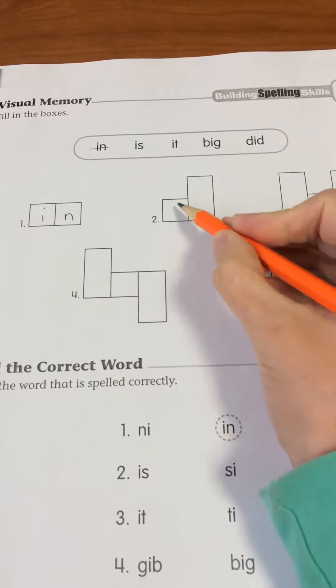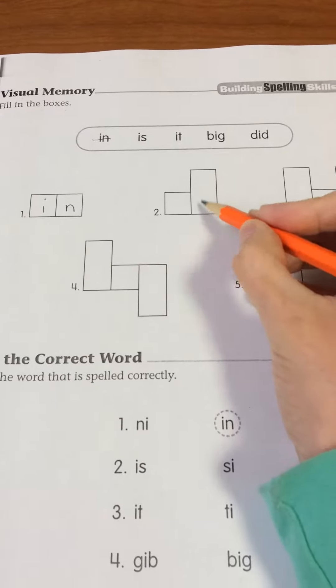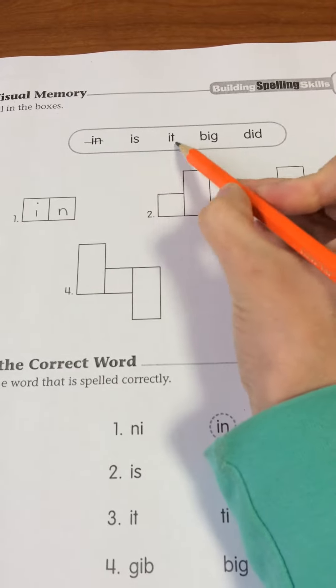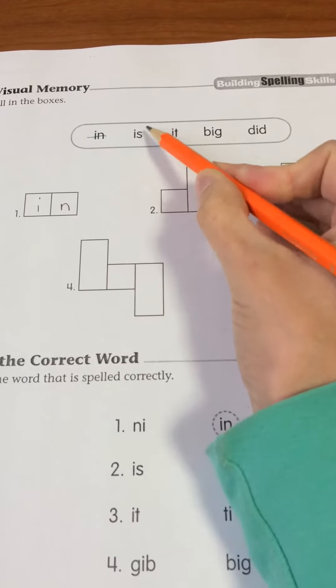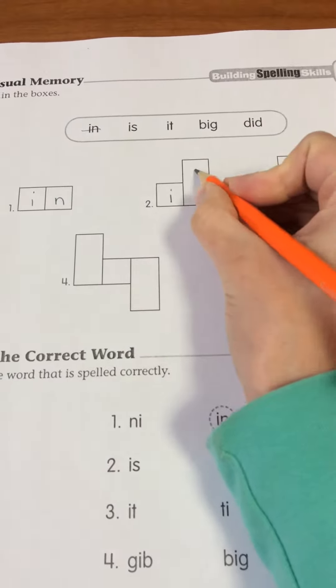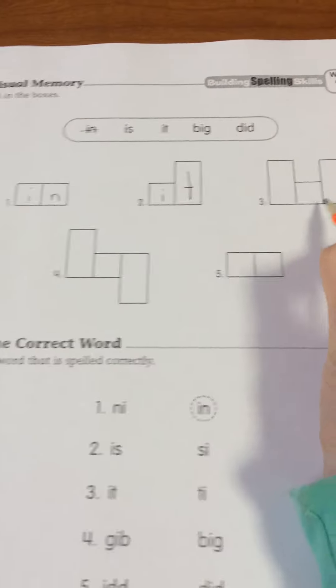Number two, we have two boxes. One is short, one is tall. So I have two two-letter words remaining. One has two short letters and one has one short and one tall. So this one should be it: I, T. Next one.